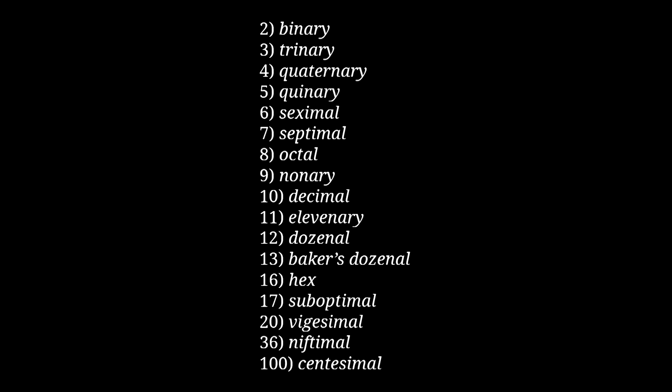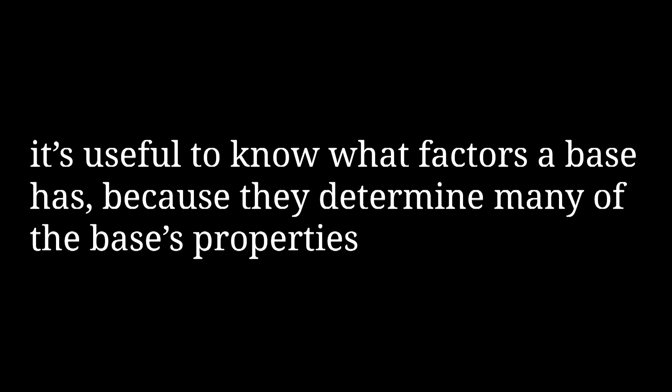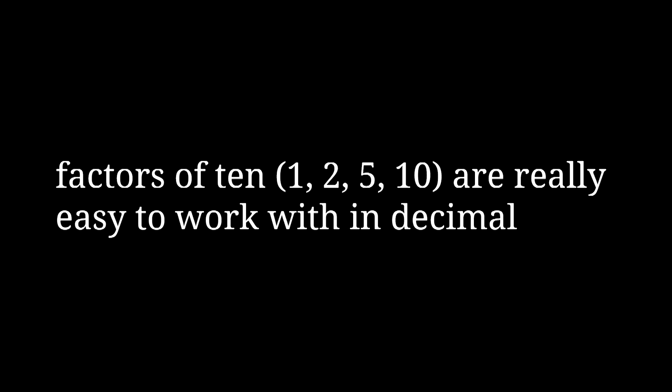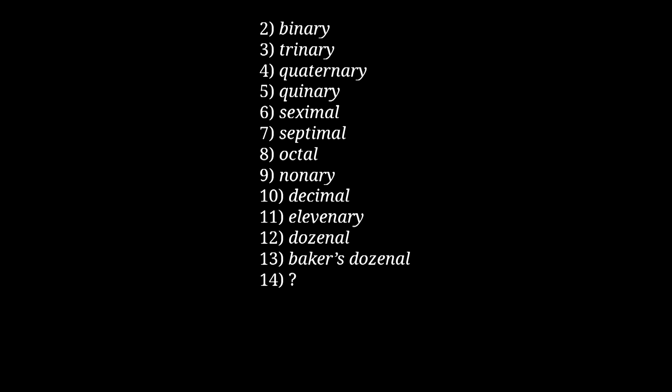Outside of these ones that get their own simple root names, bases are named according to factorization. Naming numbering systems according to factorization is really useful because what factors a base has can tell you a lot about its properties — like how 2 and 5 are easy numbers to deal with in decimal, because 10 is divisible by 2 and 5. So the first base that doesn't get its own root name is base 14, right after baker's dozenal. 14 is 2 times 7, so it's called biseptimal — you use the prefix 'bi' to multiply a base by 2. Then base 15, 3 times 5, is triquinary, with 'tri' meaning times 3.